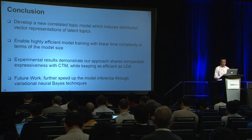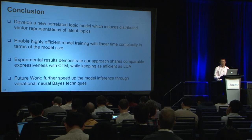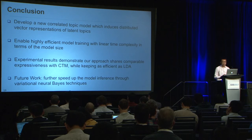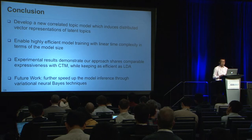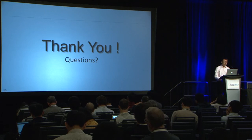In conclusion, we developed a highly efficient correlated topic model which induces distributed vector representations of latent topics and possesses linear time complexity in terms of model size. In the future, we expect to further speed up model inference through variational neural-based techniques for amortized variational updates across data examples. Thank you. Questions?